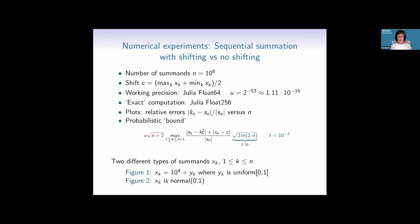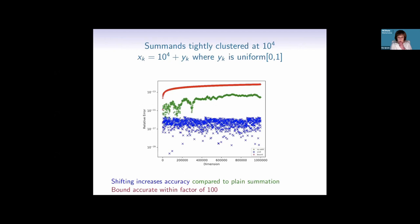In numerical toy experiments, we use 10 to 600,000 summands, with the shift set to largest plus smallest over two, approximating the empirical mean. Working precision is 64-bit in Julia; exact computation is done in 256 bits. We plot relative errors and the probabilistic bound. For tightly centered summands around 10,000, shifted summation (blue) can be more accurate by a factor of 10 or 100 compared to plain summation (green), with our bound qualitatively good and within a factor of 100.